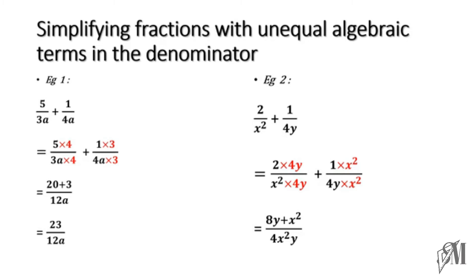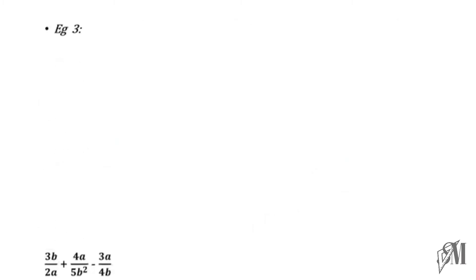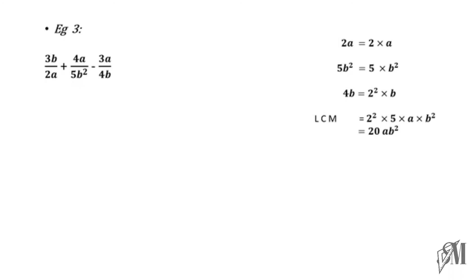Let's look at another example with three fractions all having different denominators. To find the LCM quickly: 2a can be written as 2 times a; 5b squared can be written as 5 times b squared; and 4b can be written as 2 squared times b. Here I have written all three denominators as a product of prime numbers and algebraic terms, so thereby you can find the LCM to be 20ab squared.